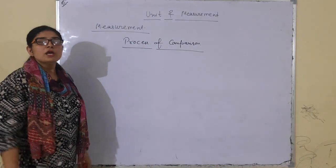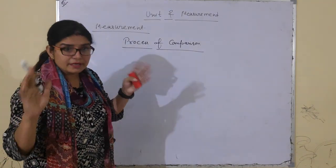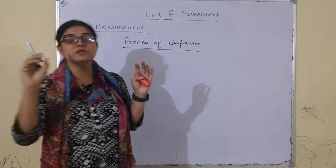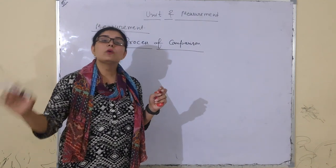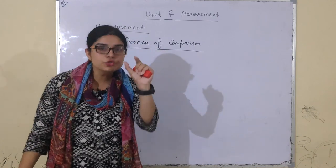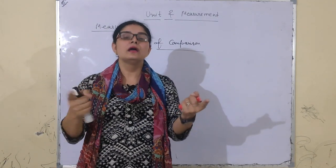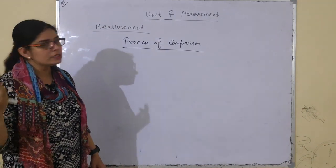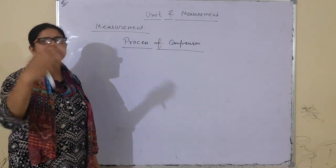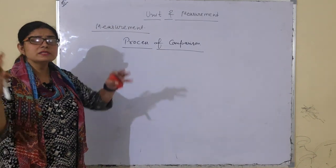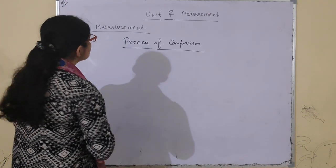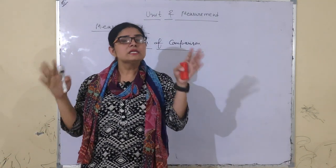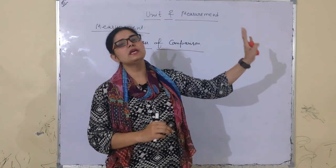Clear ho gai? Ab hum baat karte hain unit kya cheez hai. Unit ek arbitrary standard hai — an arbitrarily chosen standard of measurement of any quantity. Kisi bhi quantity ko measure karne ke liye aapne ek standard choose kiya jo internationally accepted hai — vohi hoti hai unit. Meter, centimeter, kilometer — ye sab units hain.